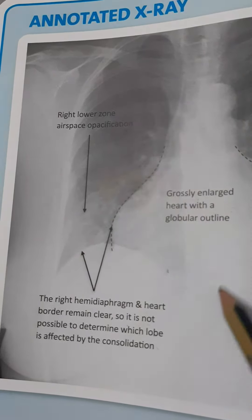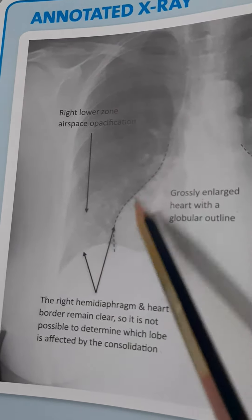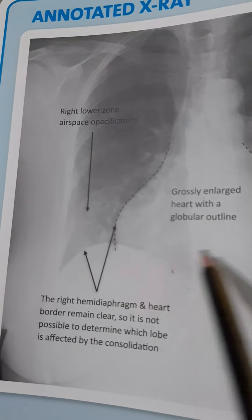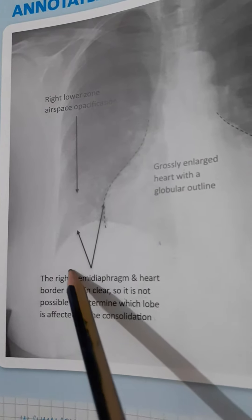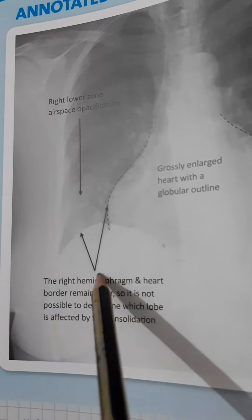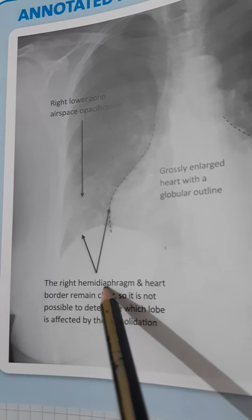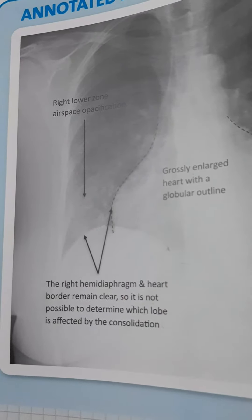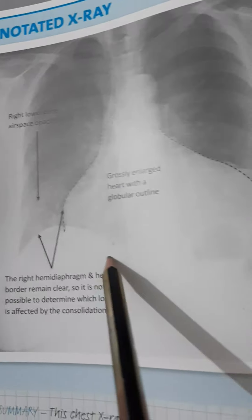Allowing for the patient's rotation, the trachea is unremarkable. The mediastinal contours are normal. Both hemidiaphragms and costophrenic angles are clear and clearly demarcated, indicating there is no pleural effusion. No free subdiaphragmatic gas is seen, and there is no abnormality of the imaged soft tissues or skeleton.